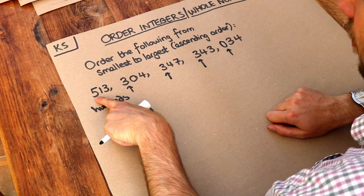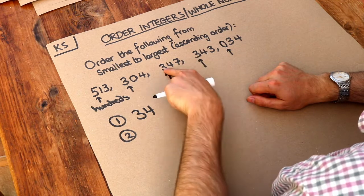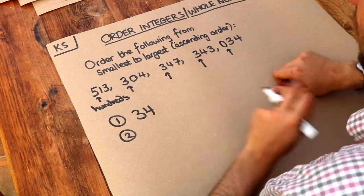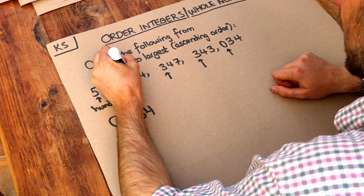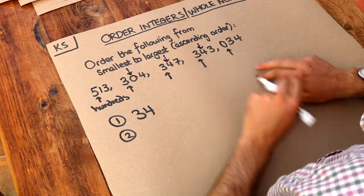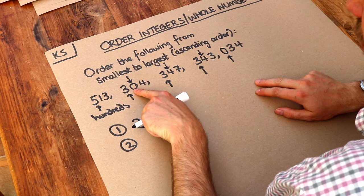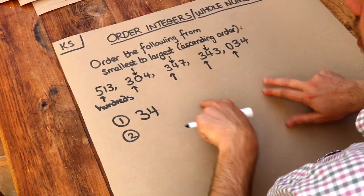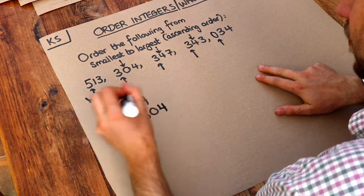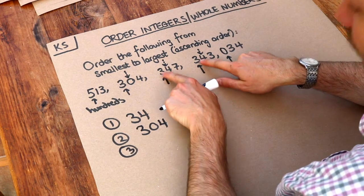Now we've got a hundreds digit of three and a hundreds digit of five — three is smaller. But we have three numbers each with three as their hundreds digit, so it's a draw. When it's a draw, we look at the next digit: the tens digit. We've got zero, four, and four. Zero is the smallest, so that number is next on the list.